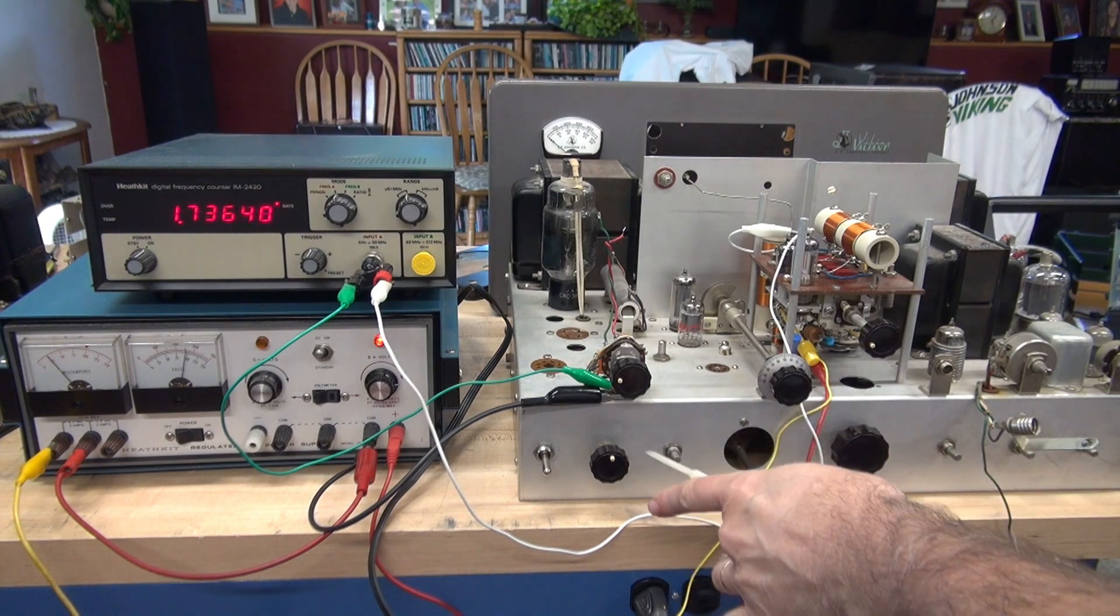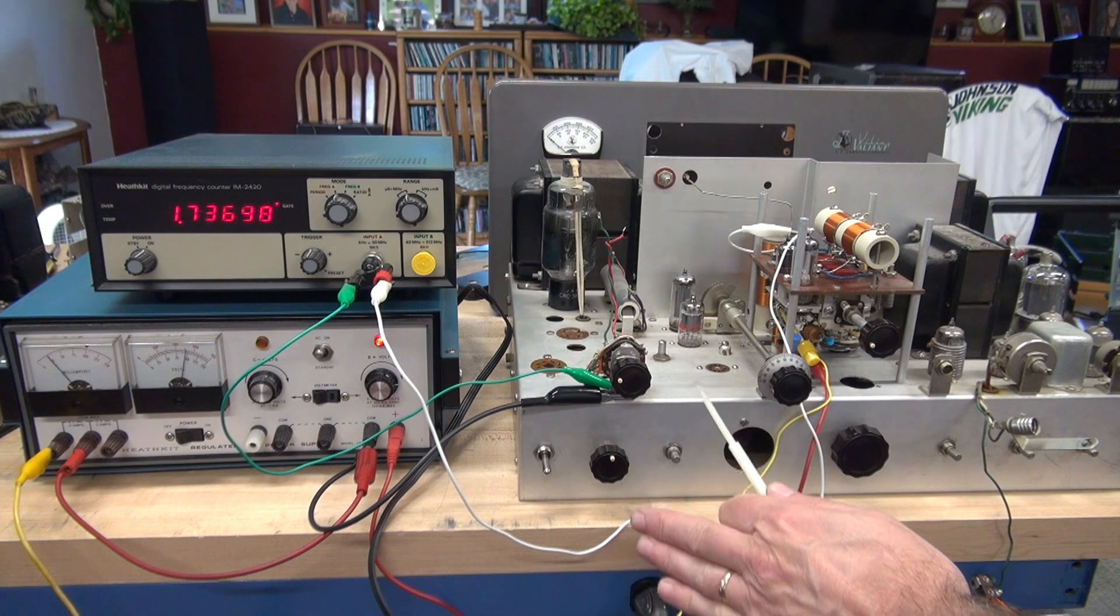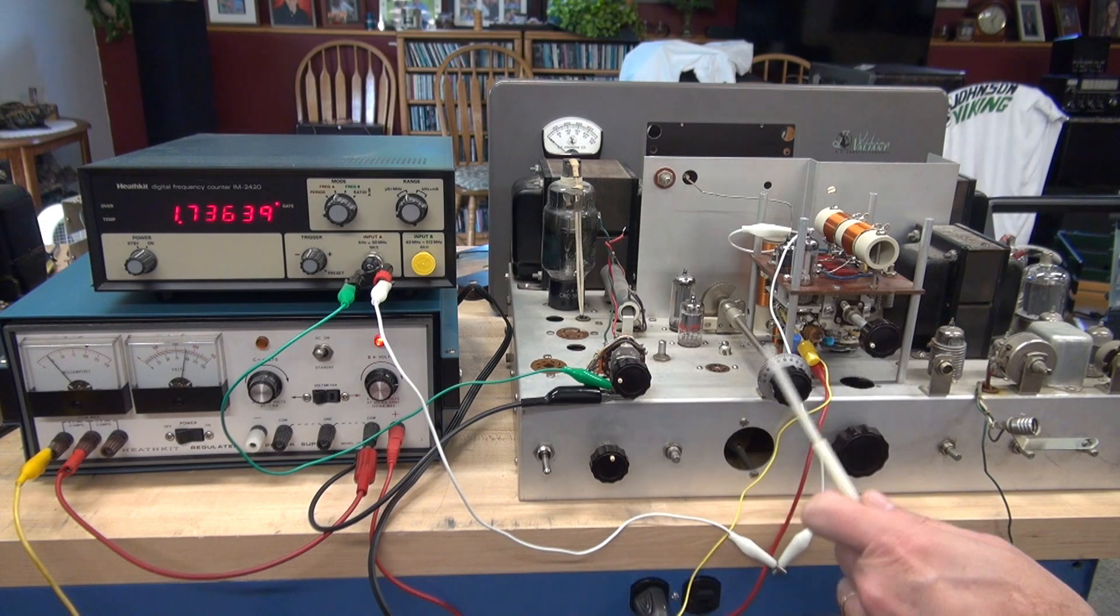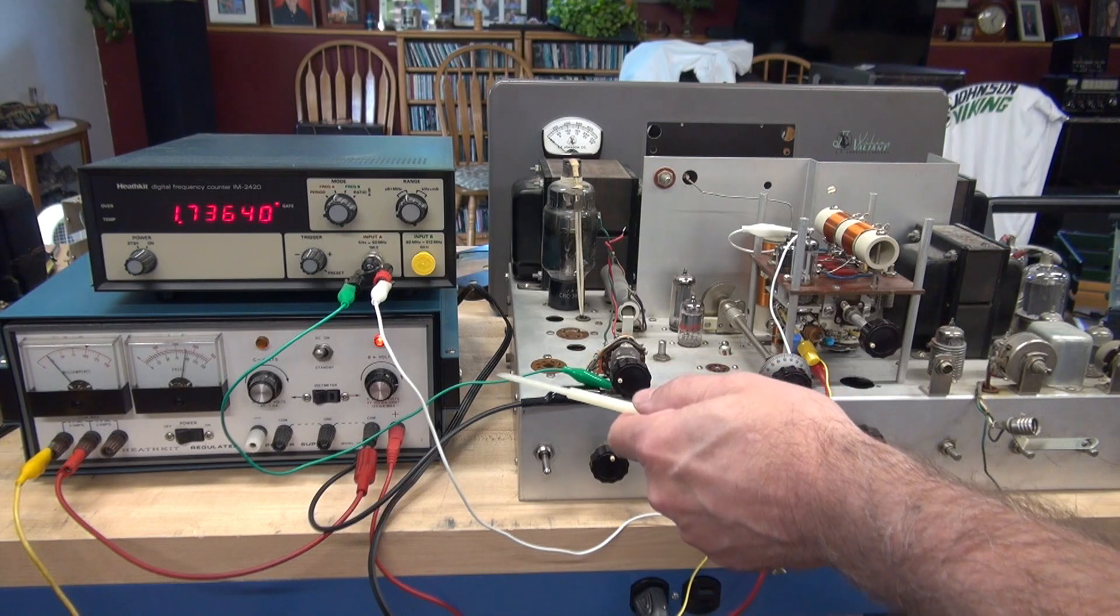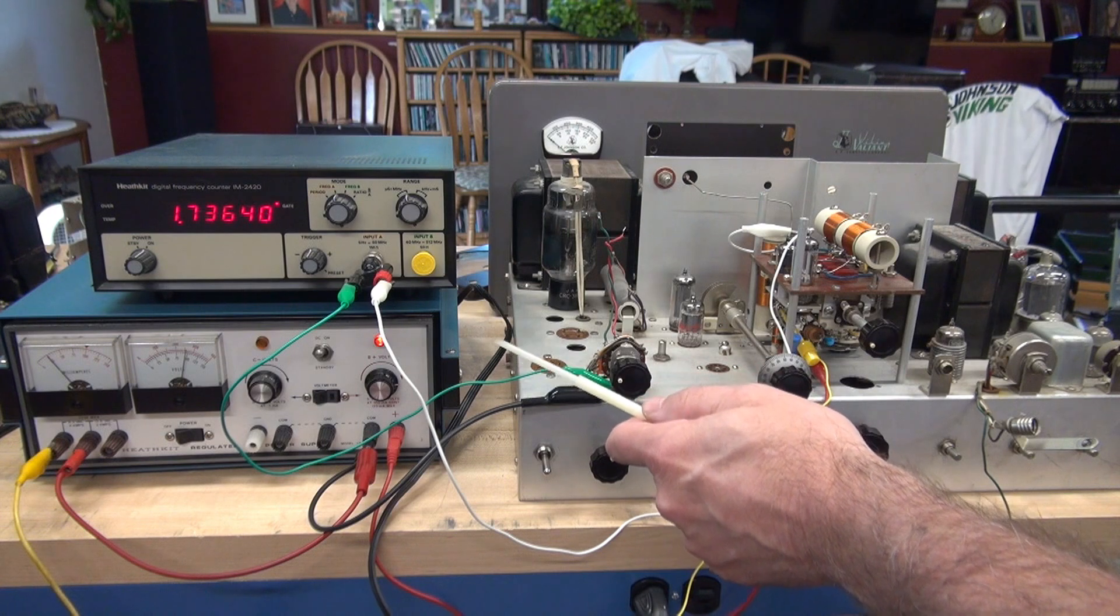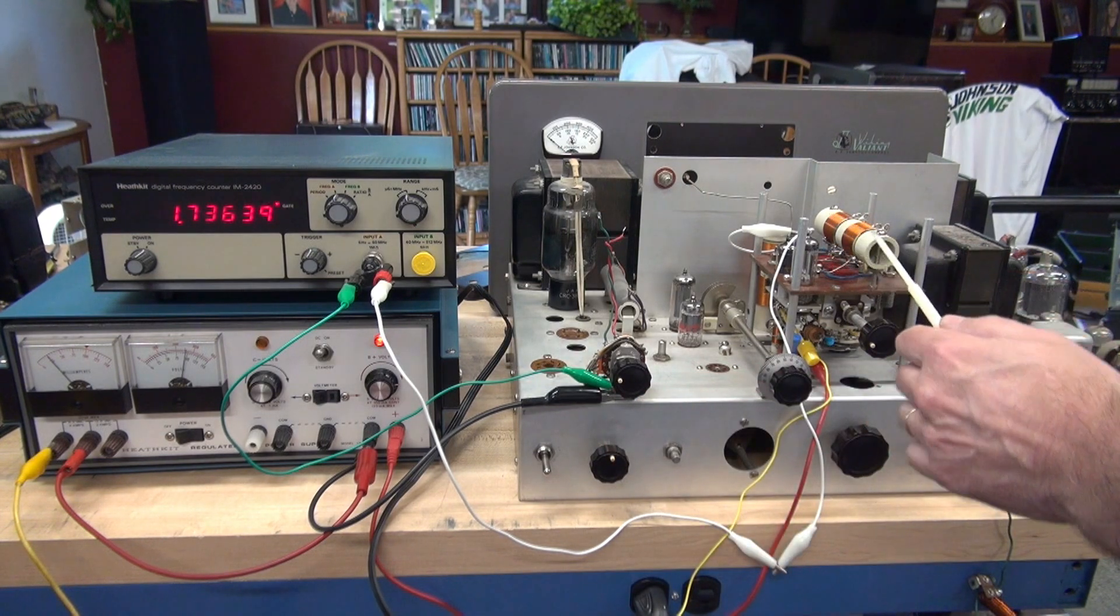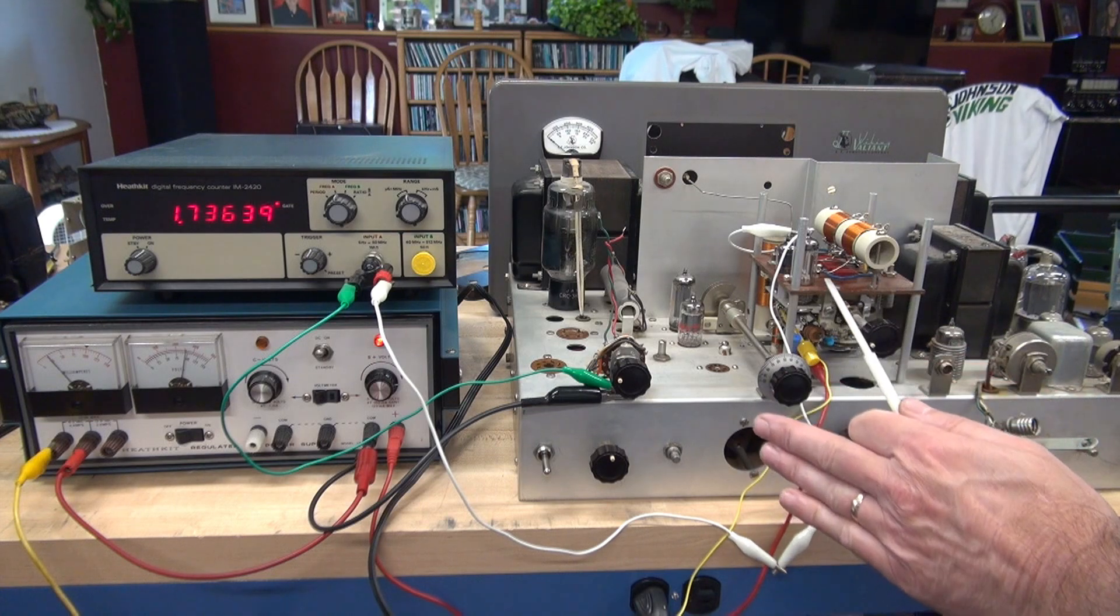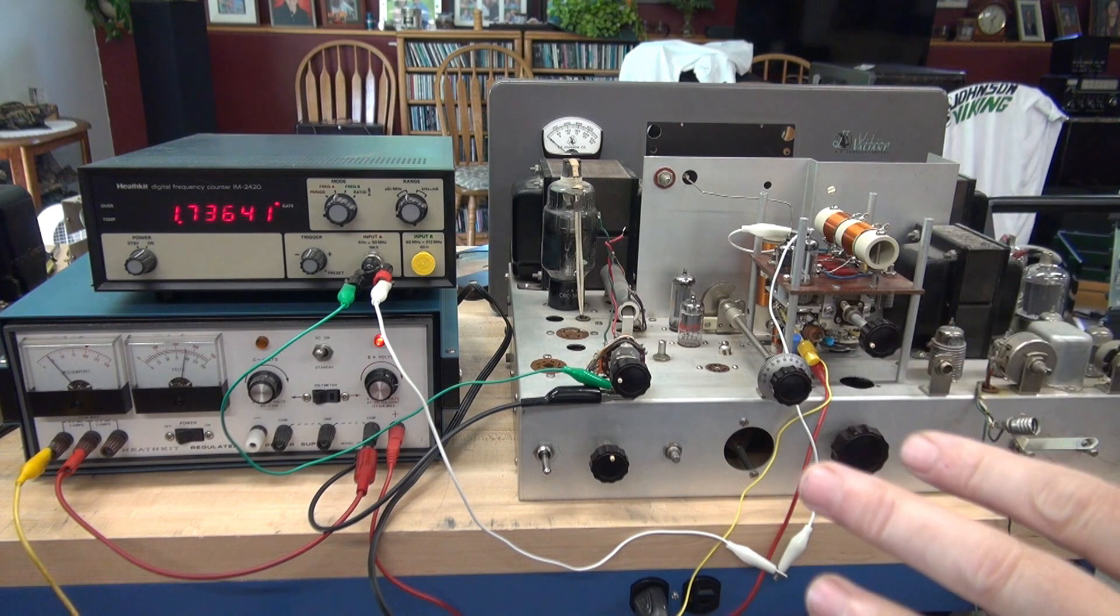Okay, you're going to set the valiance oscillator switch to the VFO position and leave it there for the remainder of the test. Next, you're going to turn on the B plus switch of our high voltage power supply, adjust the B plus to 250 volts, and verify that you see the OA2 light up. That indicates that we have high voltage.